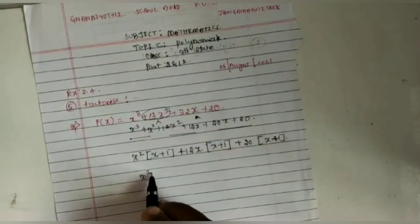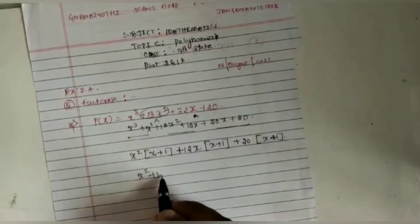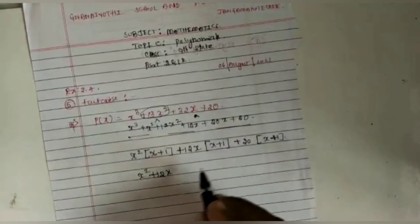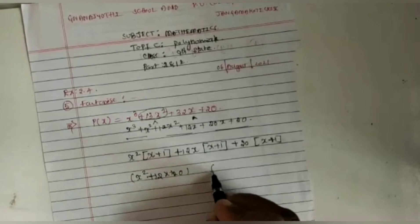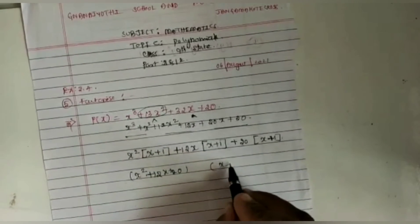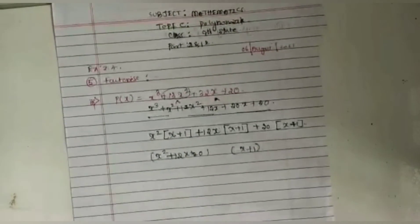We get the resulting factors: x² + 12x + 20 as the first factor, and x + 1 as the second factor.